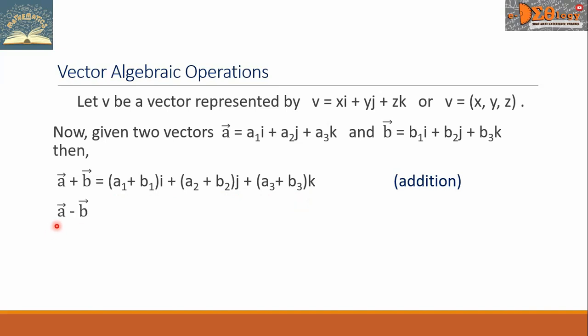For vector A minus vector B, this is about subtraction of vectors, this is equal to the quantity a sub 1 minus b sub 1 times i plus the quantity a sub 2 minus b sub 2 times j plus the quantity a sub 3 minus b sub 3 times k.